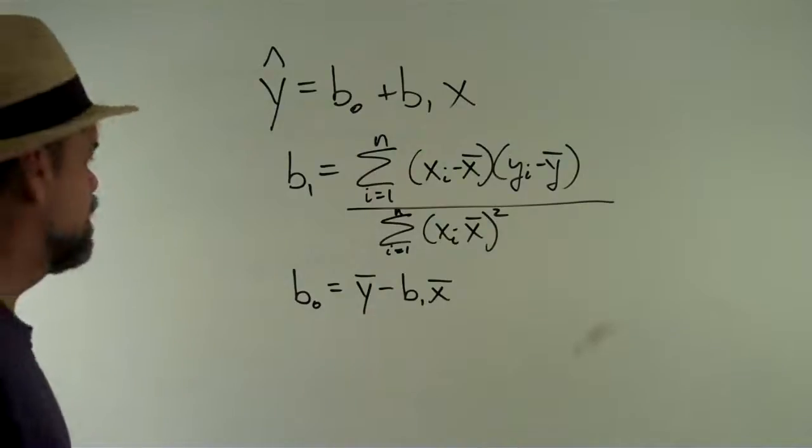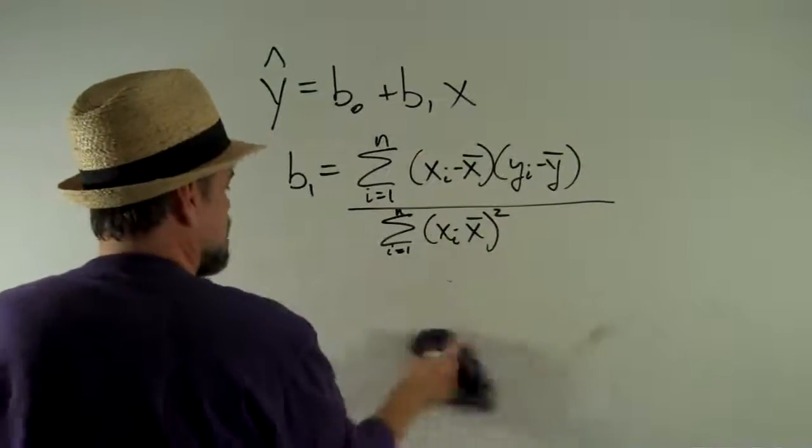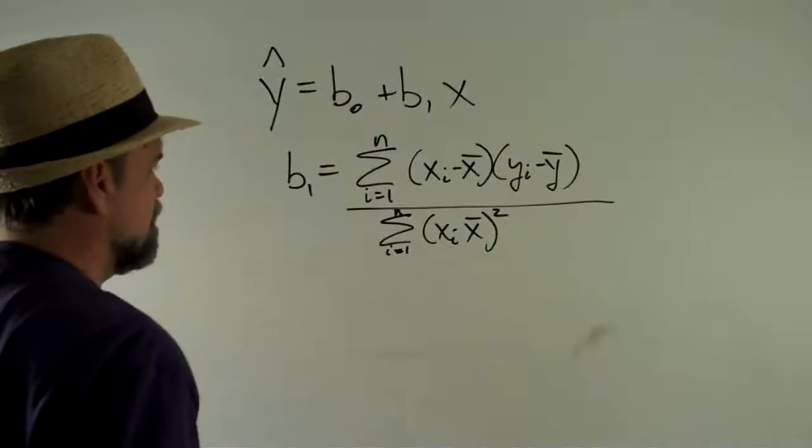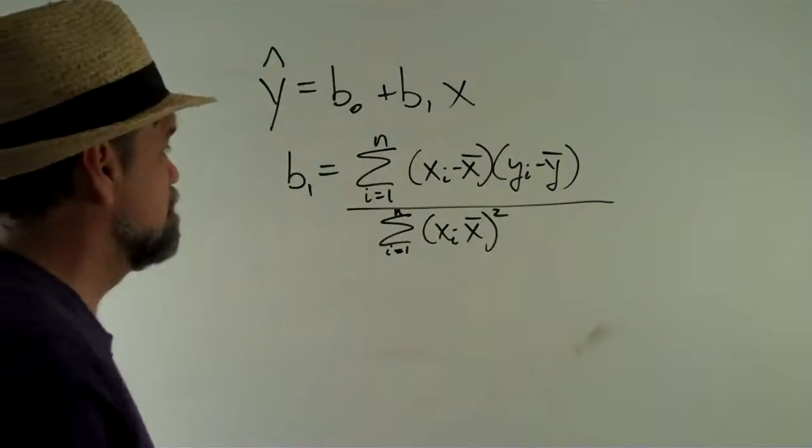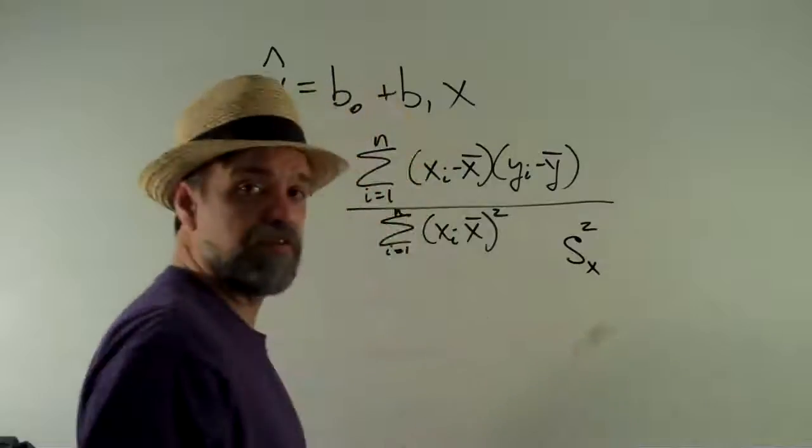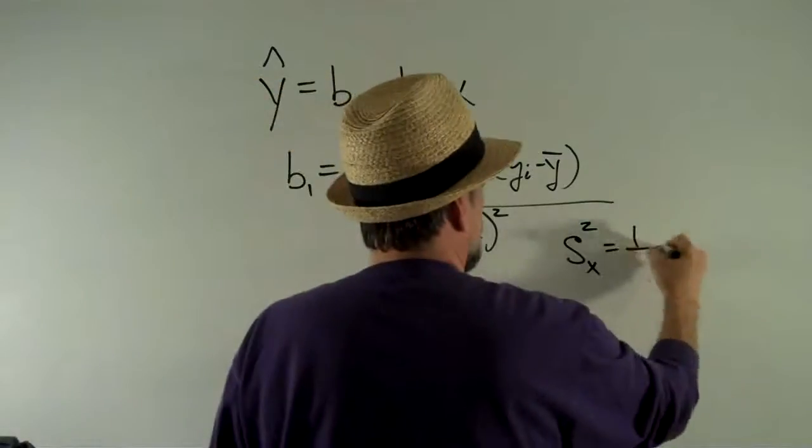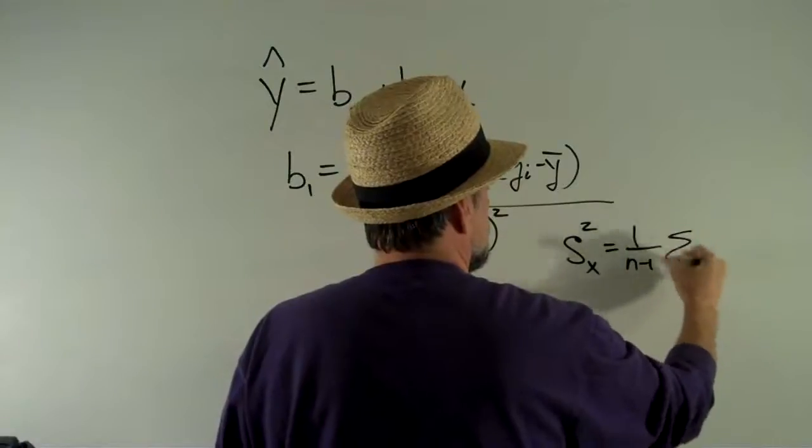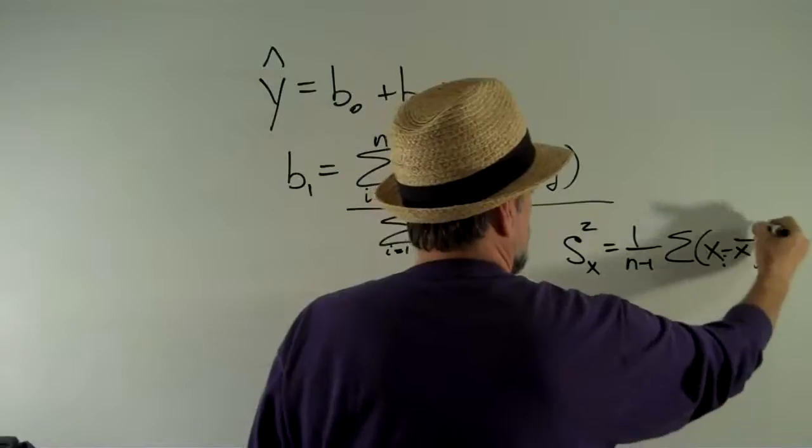There's one more thing I want to point out. Let's remember that our variance of x, the variance not the standard deviation but the variance, that's the standard deviation squared, is 1 over n minus 1 times that.